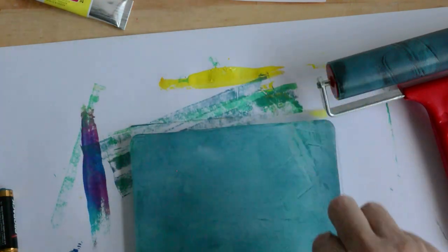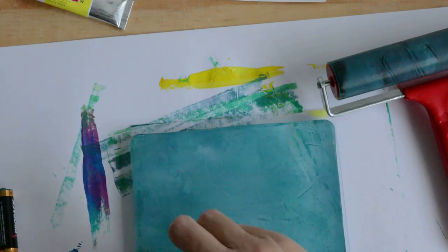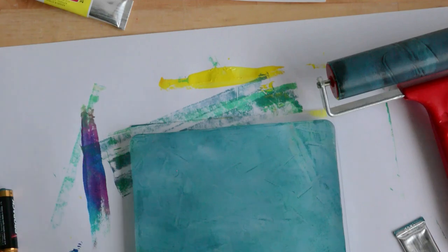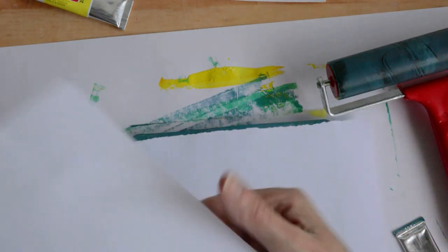Here I'm just playing with the ends of the acrylic paint tubes and just pressing them onto the plate to create random lines across the plate.